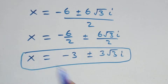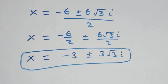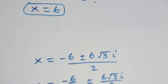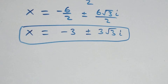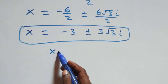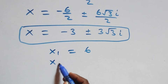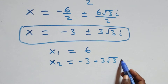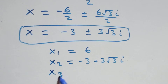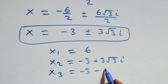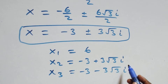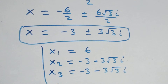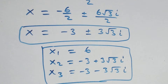We have two complex solutions, giving three solutions in total: one real and two complex. Writing them out: x₁ equals 6, x₂ equals minus 3 plus 3√3 i, and x₃ equals minus 3 minus 3√3 i.